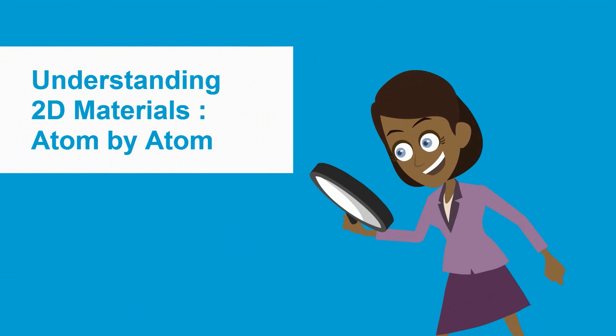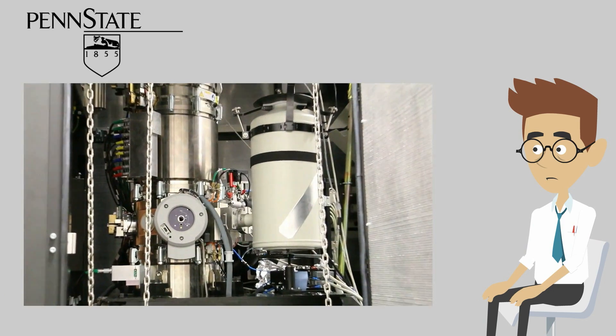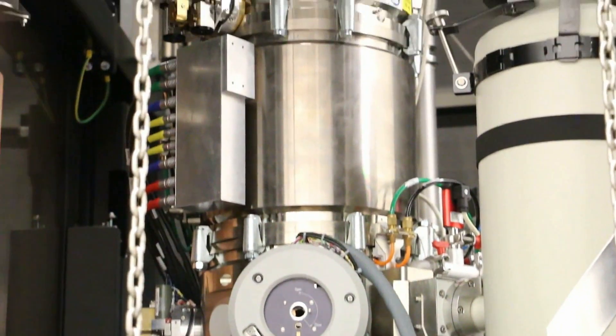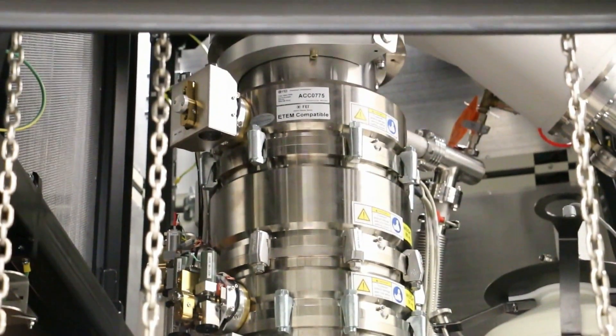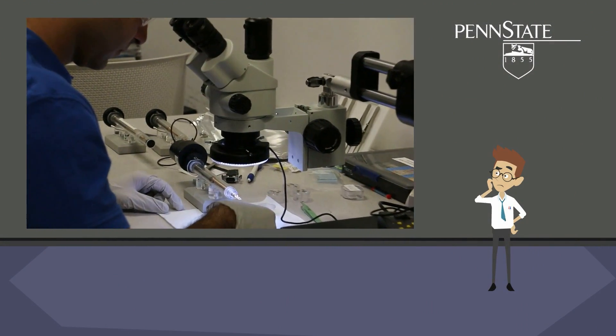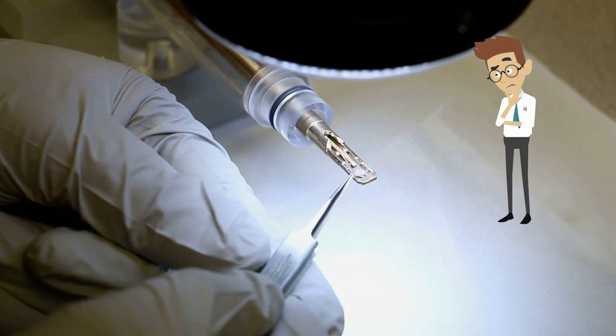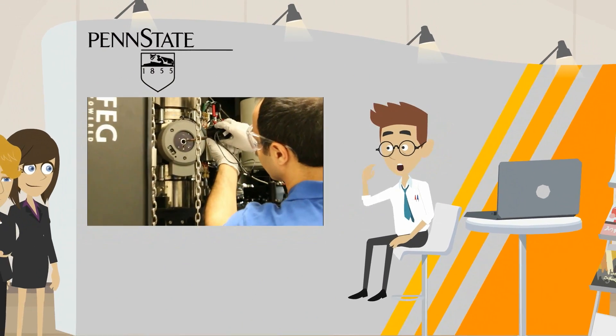We also aim to understand structure-property relationships in these unconventional materials at the atomic level. We have one of the most powerful electron microscopes in the US which allows us to probe atoms in a material. This is particularly important as local atomic and chemical structures of materials determine their functional properties at the macroscale.